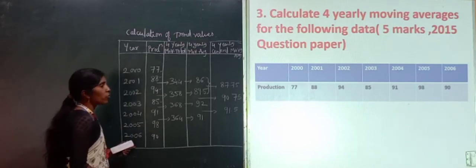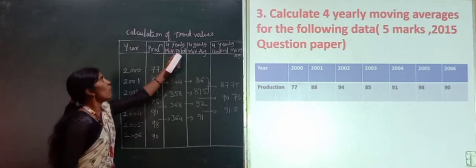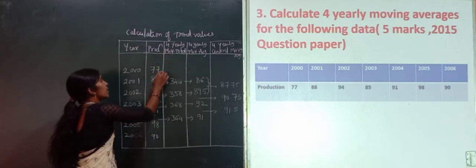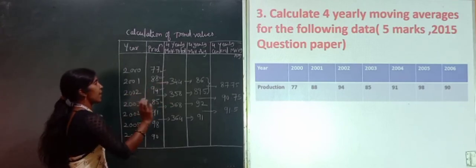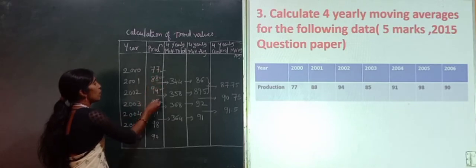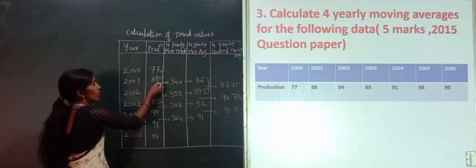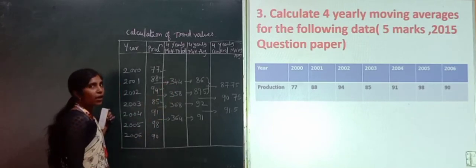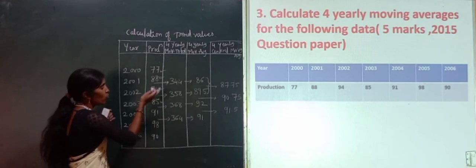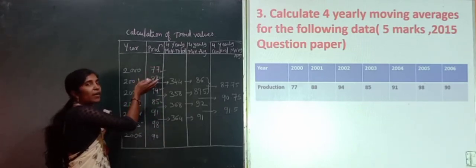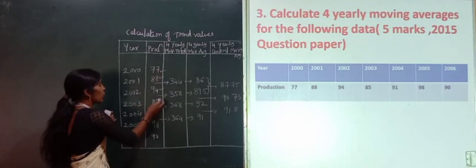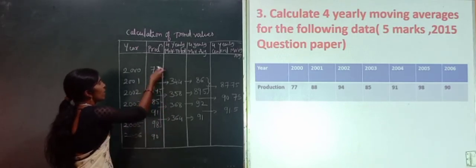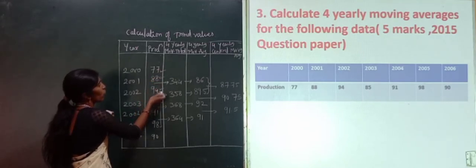First we enter whatever information is given, then we calculate the 4 yearly moving total. For the 4 yearly moving total, we take 4 consecutive years and sum them. So the first total: 77 plus 88 plus 94 plus 85 gives a total of 344.